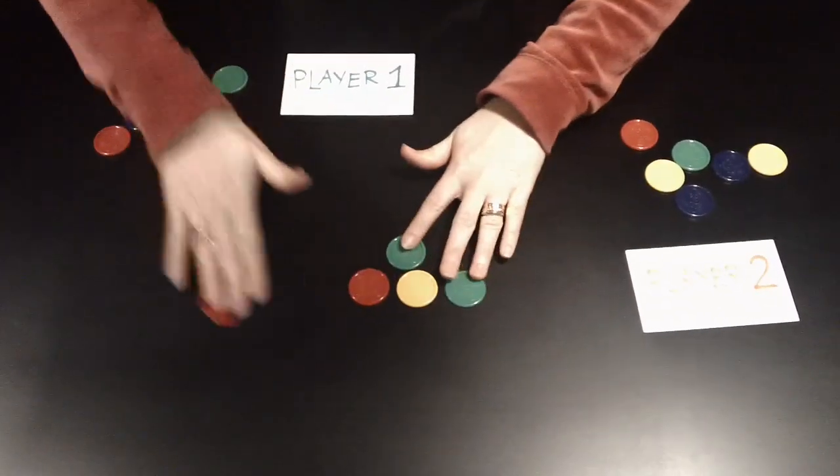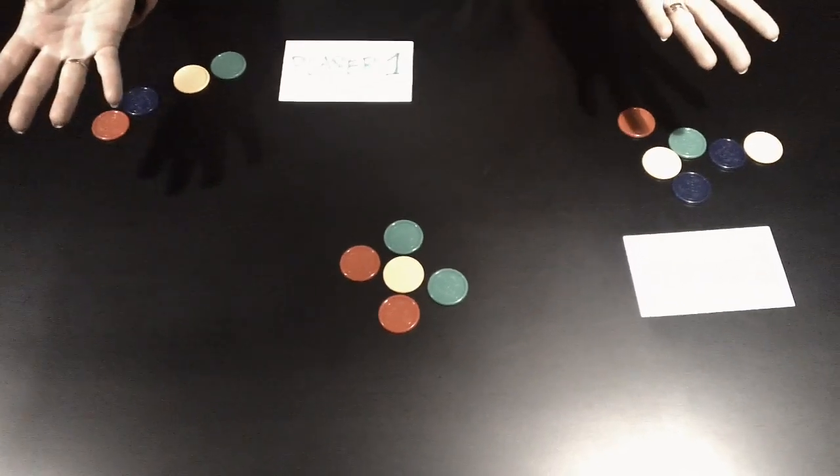The object of the game is to have your opponent face five. Now, don't show this video to the kids. They will figure out what the strategy is.